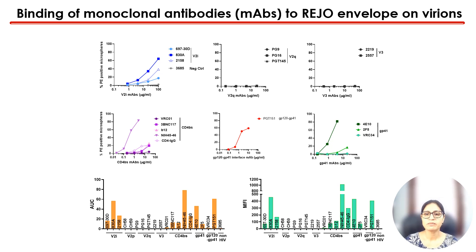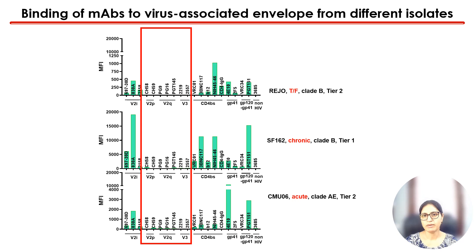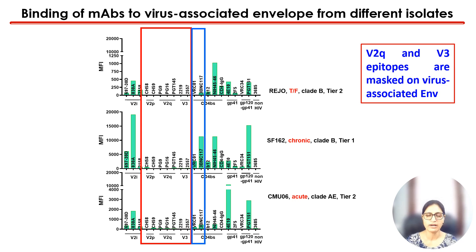To see if this was specific to the REGO isolate, we tested two other isolates: CMU06 from clade A and SF162 from clade B, representing different clades and different neutralization sensitivities shown as tier 1 and tier 2. The same pattern of V2Q and V3 showing no binding is seen, highlighted in red. In the blue box, you can see that the CD4 binding site epitopes are more exposed on SF162 versus the other two, which is expected for tier 1 versus tier 2 viruses since tier 1 virus envelope is in a more open conformation.